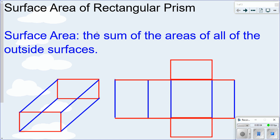In this lesson, we're going to look at how to find the surface area of rectangular prisms. Surface area is just the sum of the areas of all of the outside surfaces. So if you take a rectangular prism and find the area of all of the outside sides and add those together, that would be the surface area. It's what you would calculate if you were trying to cover this with something and you want to know how much material you would need.